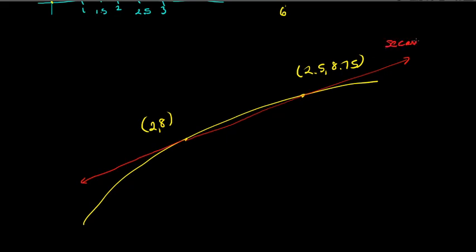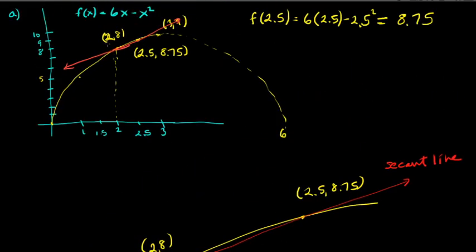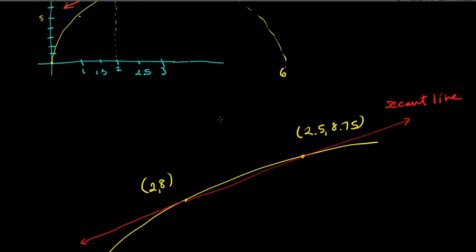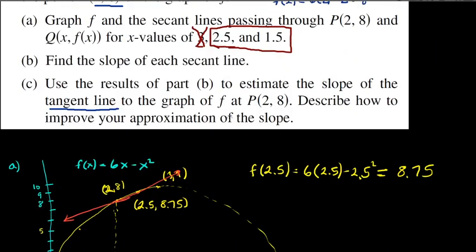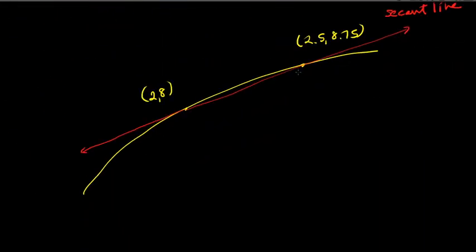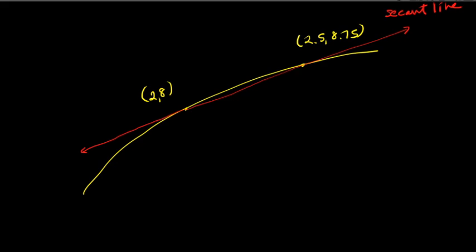For part B, we want to calculate the slope of this secant line — the red line connecting (2, 8) and (2.5, 8.75). Using the slope formula y2 minus y1 over x2 minus x1...